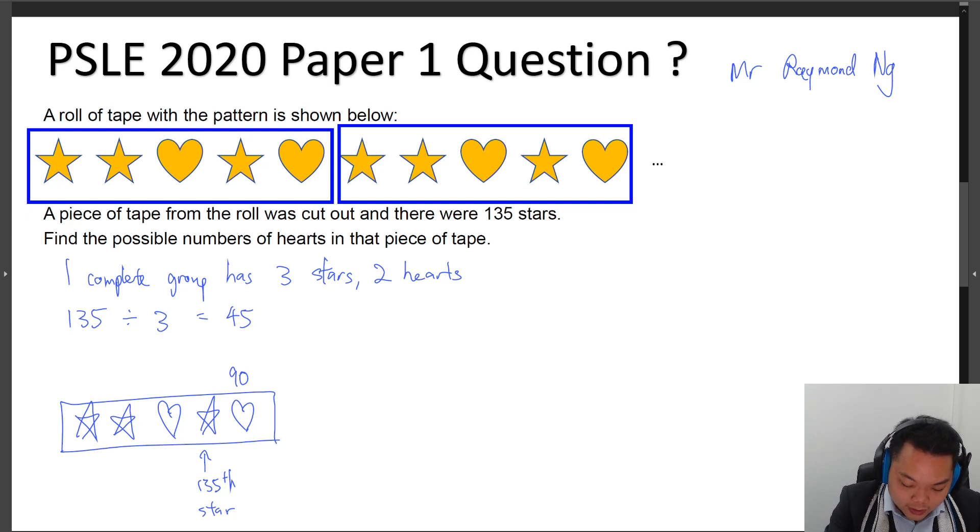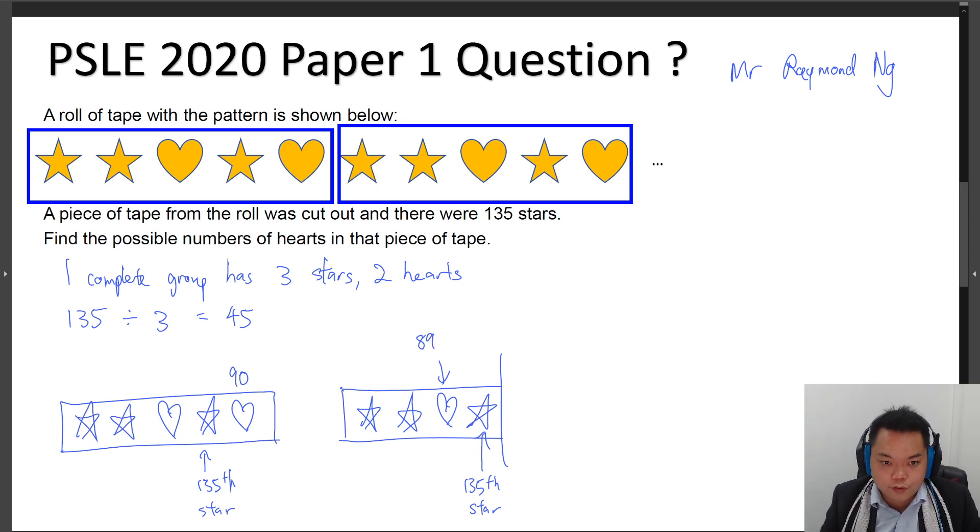The other one is at the 135th star, instead of having five items, you cut off the tape over here, and then you would have 89 hearts.